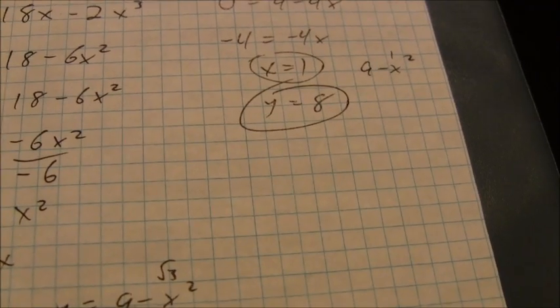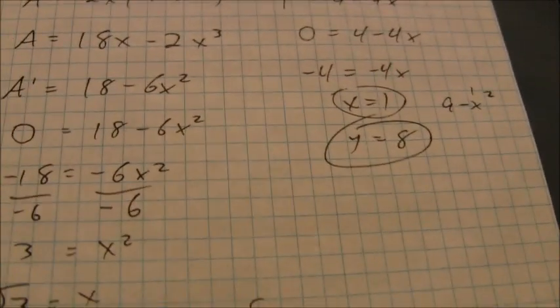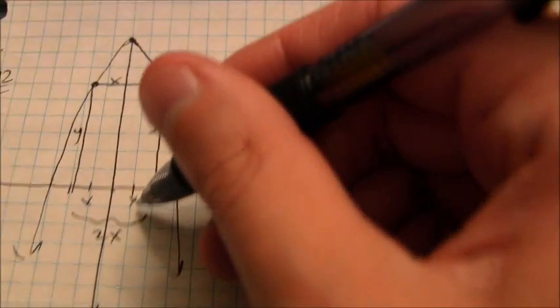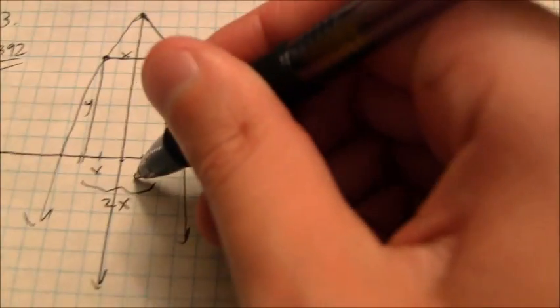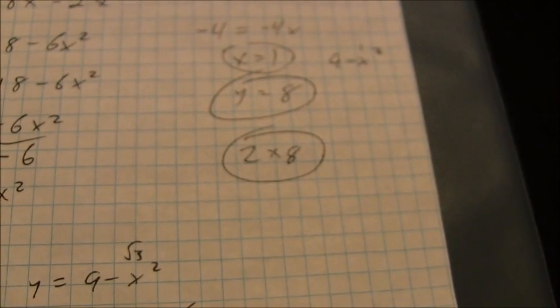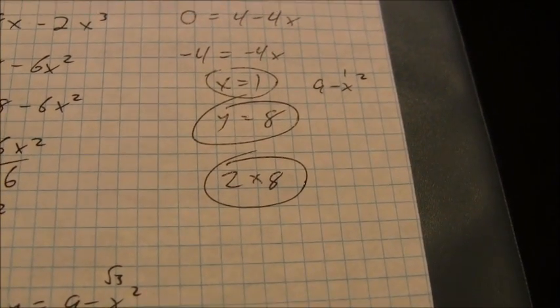The dimensions in this case, if that's the point 1, 8, if you go back and look at the original, if x is 1, that means the width is actually going to be 2. And then the height will be 8. So it would be a 2 by 8 rectangle would give me my maximum possible perimeter for those restrictions.